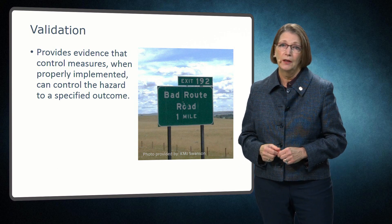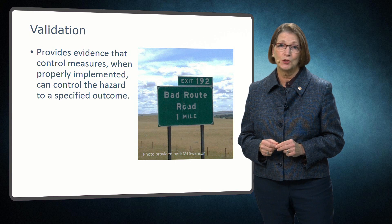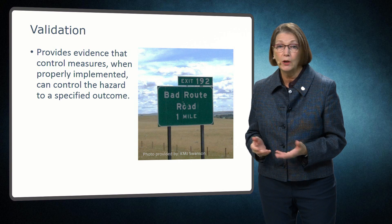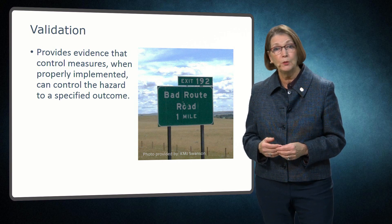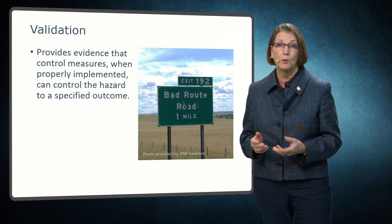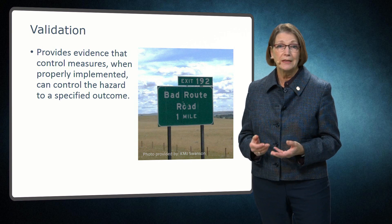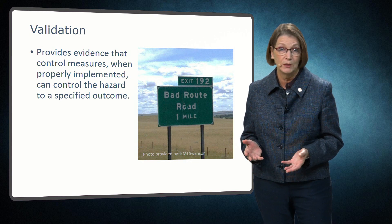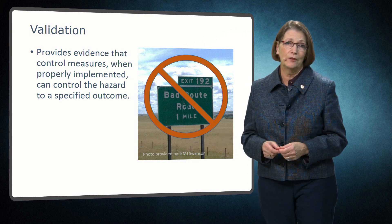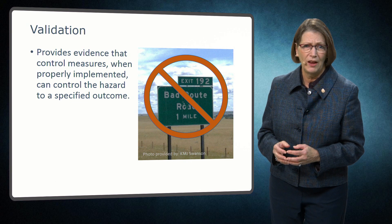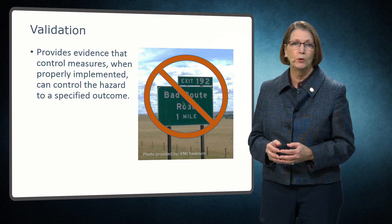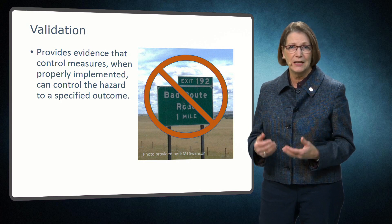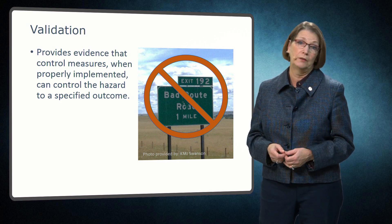Without proper validation, the effectiveness of the process to control food safety risk isn't known. Regulatory guidance or industry standards frequently provide validated process parameters for many products. For example, time and temperature requirements for pasteurized milk are typically specified by governments. When such guidance is not available, proper validation is important to avoid taking the wrong road and having a food safety incident because the designed process is not effective at actually controlling the hazard.